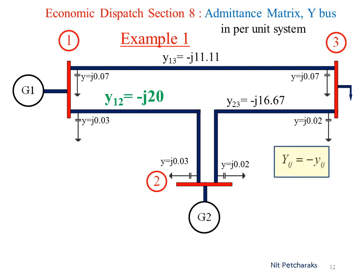Let's start with Y12, which is the negative value of admittance of the line linking between bus 1 and bus 2. The value of Y12 is J20 per unit.